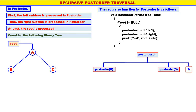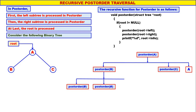Now let us go to post_order(B). Left child of B is null, therefore it is post_order(null). Right child of B is null, therefore again it is post_order(null), and then you display B. Post_order(null) means when root is null, nothing will happen. B is the first one to be displayed, so post_order(B) is over.